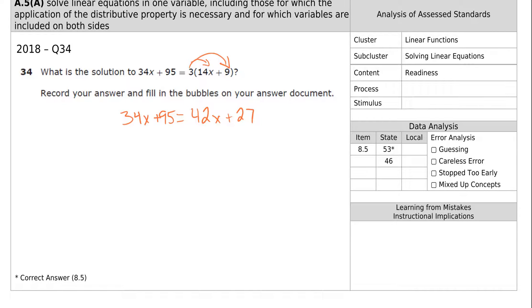We have variables on both sides. We need to get them on the same side. I'm going to bring this 34 to this side. Minus 34x minus 34x. Those are gone.